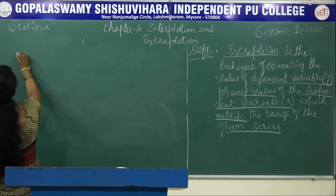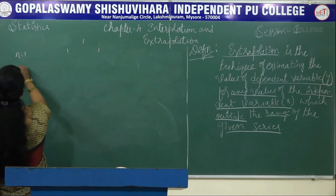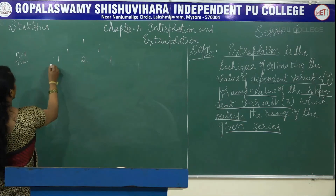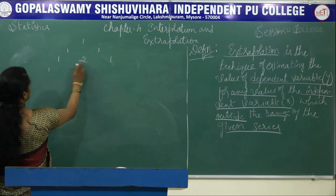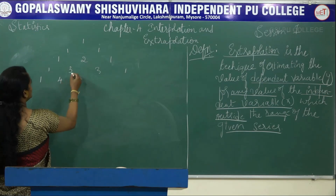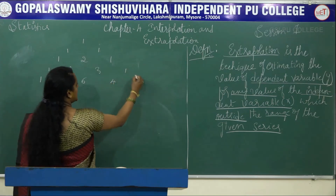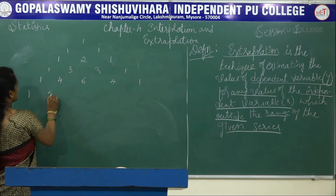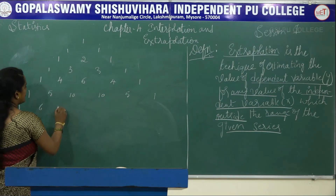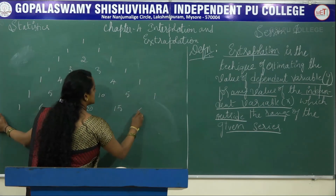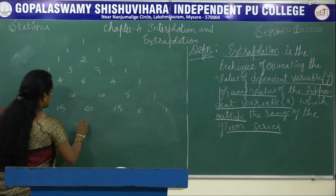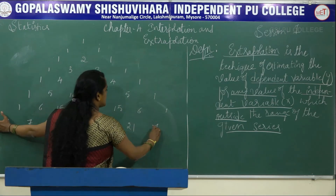If 1 is a constant: for n=1, the row is 1, 1. For n=2: 1, 2, 1. For n=3: 1, 3, 3, 1. For n=4: 1, 4, 6, 4, 1. For n=5: 1, 5, 10, 10, 5, 1. For n=6: 1, 6, 15, 20, 15, 6, 1. For n=7: 1, 7, 21, 35, 35, 21, 7, 1.